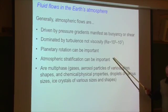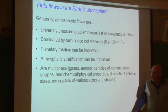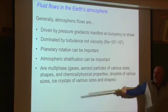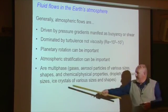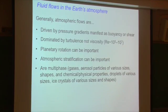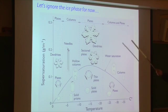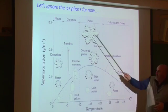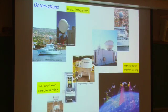Atmospheric stratification or stability can be important in determining the nature of the turbulence. When we talk about multiphase flows, we mean there's gases, aerosol particles of various sizes and shapes, droplets of various sizes with full size spectra, and maybe ice crystals of various sizes and habits. I'm a bit of a weenie and ice scares me — I deal mostly with low clouds, so we don't worry about ice. It's really complicated because the crystal type you get is very dependent on temperature and supersaturation.